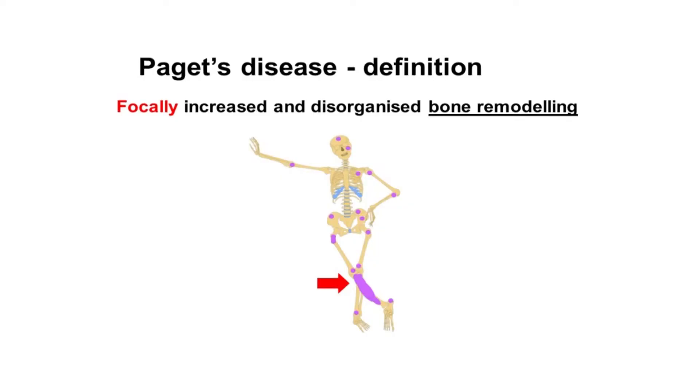It occurs primarily with ageing — in the ageing skeleton, after the age of 55 or 50. This bone remodelling gets out of control and progresses, and it can cause bone swelling, deformity — classic features of Paget's disease.